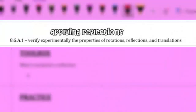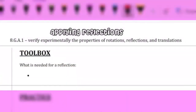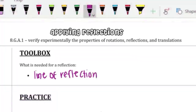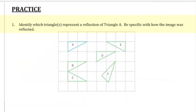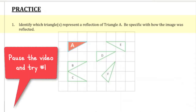Applying Reflections. In order to apply a reflection, you need to know the line of reflection. Let's practice. Identify which triangle or triangles represents a reflection of triangle A. Be specific with how the image was reflected.